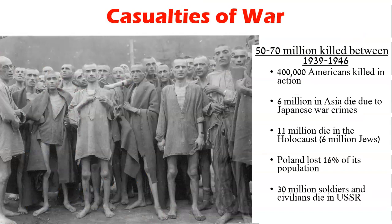We also talk about the casualties of war, including the Armenian genocide — we won't only talk about the Holocaust. Fifty to 70 million people were killed in this time period. 400,000 Americans were killed in action. Six million in Asia died due to Japanese war crimes. Eleven million died in the Holocaust — six million of them were Jews, along with gay people and Roma who were also killed. Poland lost 16% of its population, and 30 million soldiers and civilians died in the USSR.